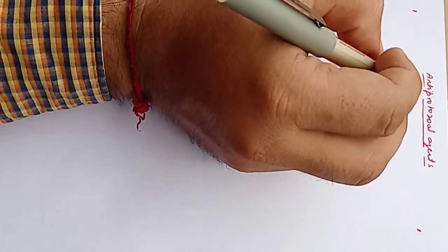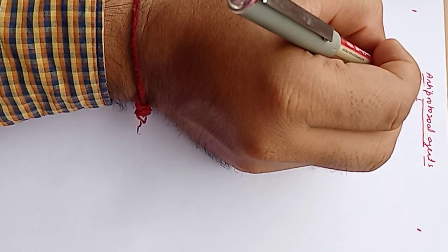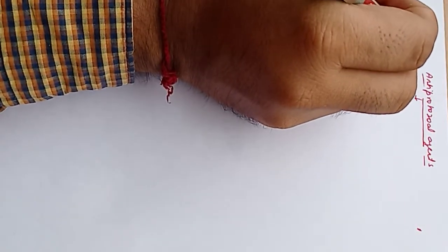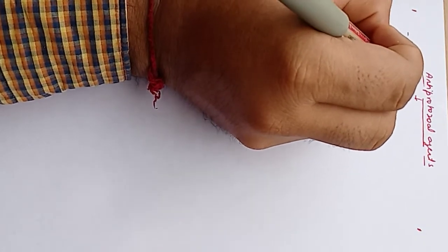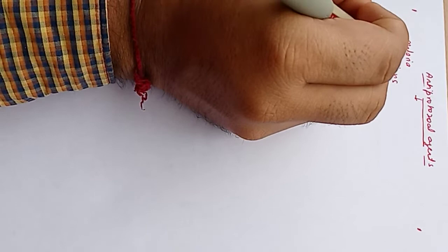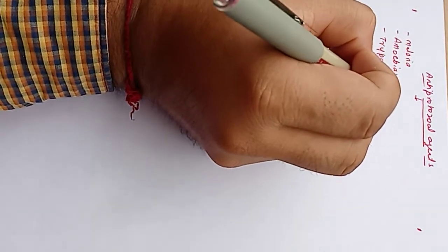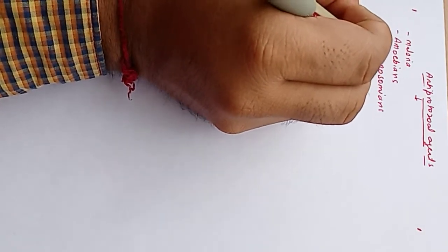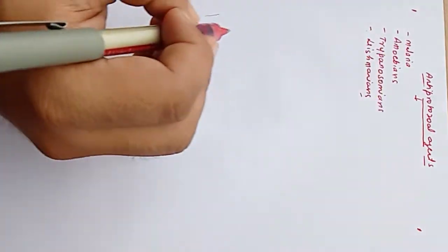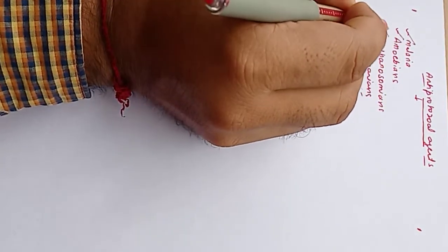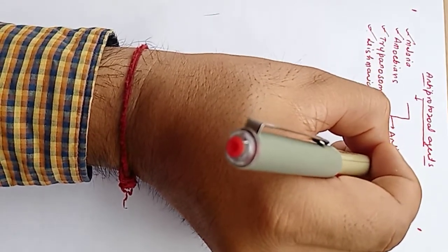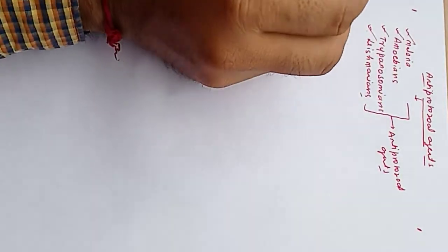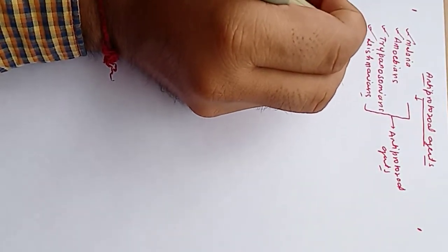Good morning. In this video I am going to discuss anti-protozoan agents. These are the drugs or agents which are used in the treatment of protozoan infections like malaria, amoebiasis, trypanosomiasis, leishmaniasis (kala-azar). These are the most common protozoan infections, and the drugs used in their treatment are called anti-protozoan agents. The first one is malaria, and the drugs used in its treatment are as follows.